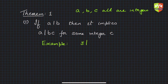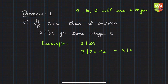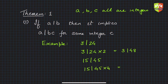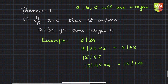For example, 3 divides 24, so 3 also divides 24 times 2, which is 48 — and that is true. Another example: 15 divides 45, so 15 also divides 45 times 4, which is 180. And 15 does divide 180. So this property holds true.